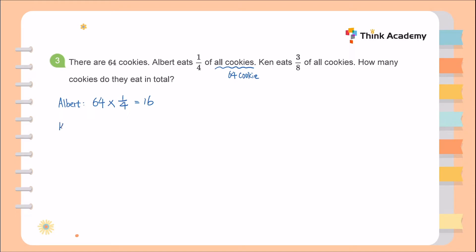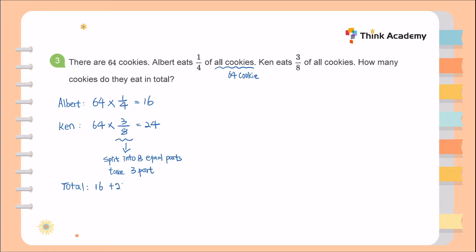Ken eats 3/8 of all cookies. So 64 times 3/8: split 64 into 8 equal parts — one part is 8 — and Ken eats 3 parts, giving 3 times 8 equals 24 cookies. The question asks for the total, so 16 plus 24 equals 40. Together, they eat 40 cookies. This is Method 1.